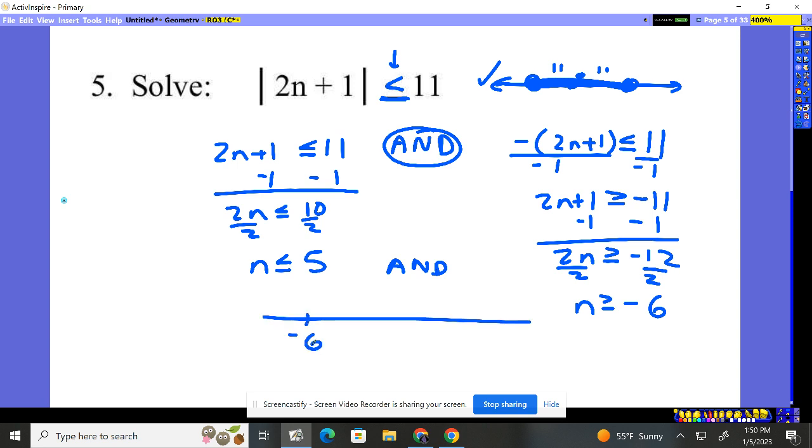On a number line, here's negative 6, here's 5. Our values have to be greater than negative 6, but yet less than or equal to 5. So it's all these in here, just like I said it was going to be up here.